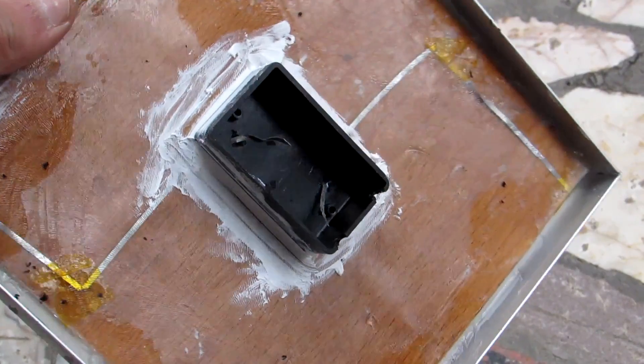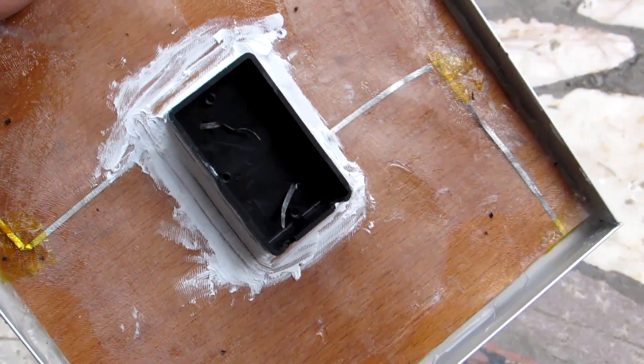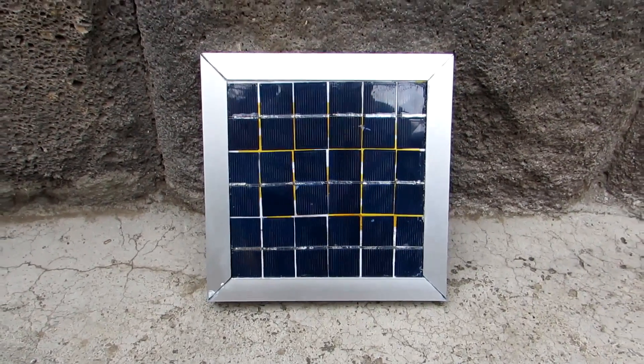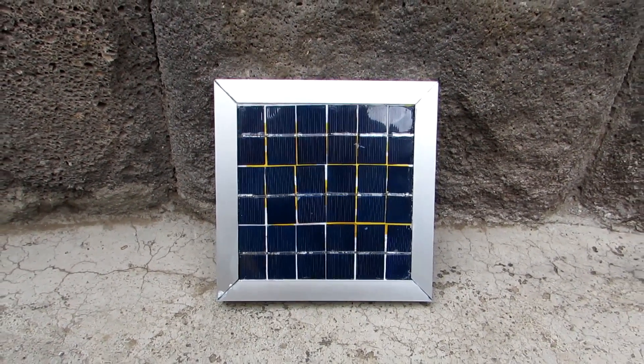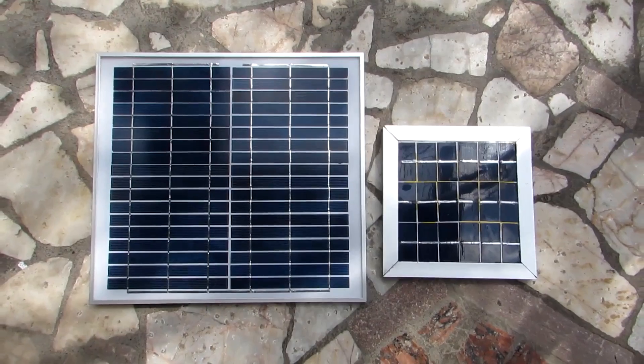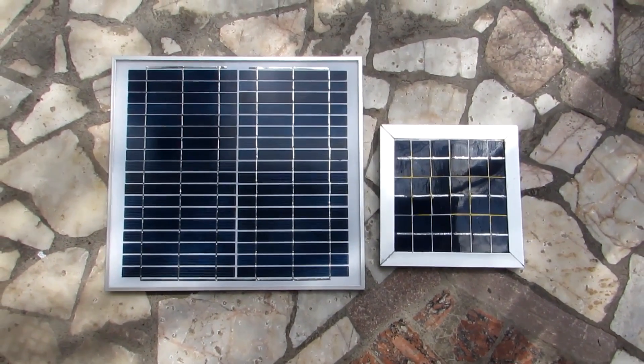All the above operations can be carried out before the sealant dries, but always do it outdoors. After a day, the excess sealant is removed and we get a pretty good battery. It remains only to test it once more and it is already possible to use it.